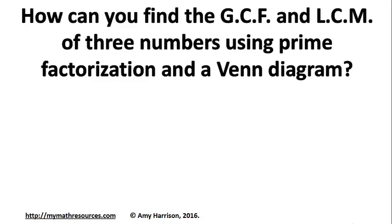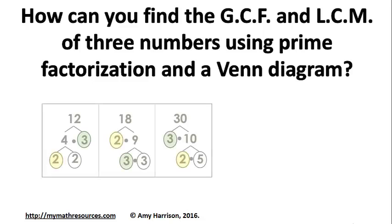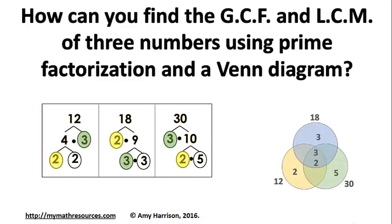How can you find the greatest common factor and the least common multiple of three numbers using prime factorization and a Venn diagram?